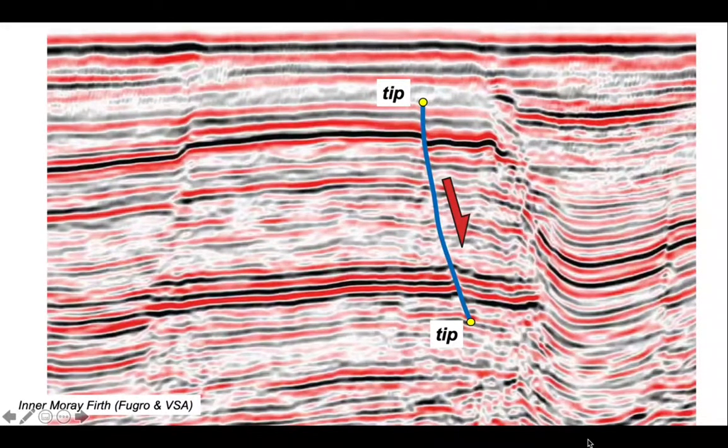So coming back to our seismic, we can identify on the profile a fault terminating upwards with no offset towards the top and at the bottom. So our tip line goes in and out of the screen threading through those two yellow blobs.